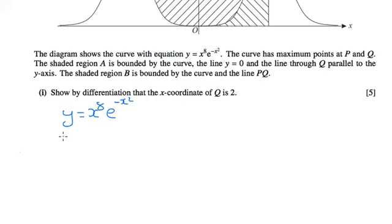So using the product rule, which is to differentiate the first term, which is 8x^7, and leave the second term alone, plus differentiate the second term and leave the first term alone.